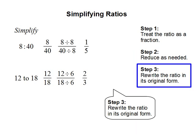Step 3. Rewrite the ratio in its original form. So 1 over 5 is then written as 1 to 5. 2 over 3 is written as 2 to 3.